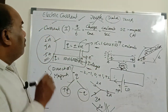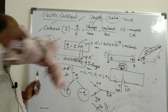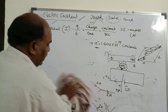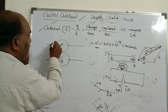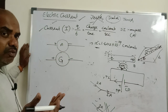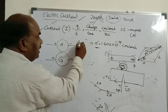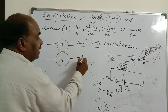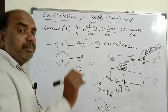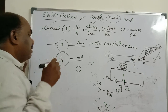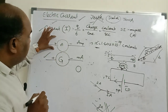To measure current we have two instruments: ammeter and galvanometer. Ammeter measures current in amperes, whereas galvanometer measures current in milliamperes — small amounts of current such as those produced by a lemon, dung, or decomposed vegetables can be measured with a galvanometer. Both instruments must be connected in series.